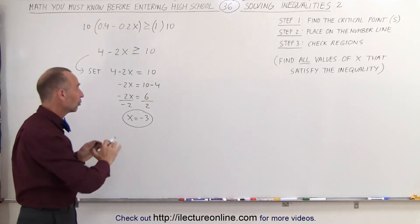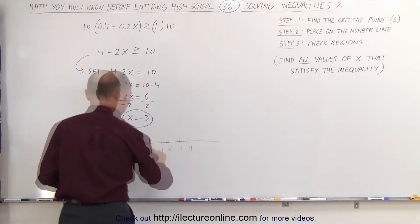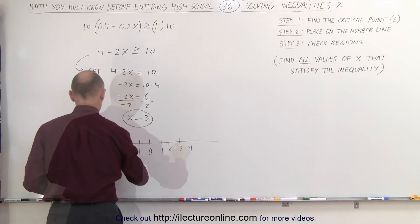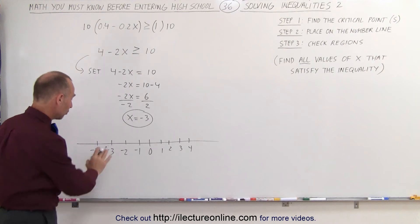The next step is we're going to draw a number line: negative 4, negative 1, 0, negative 2, 1, negative 3, and negative 4. And then we're going to locate that critical point. It's right here.